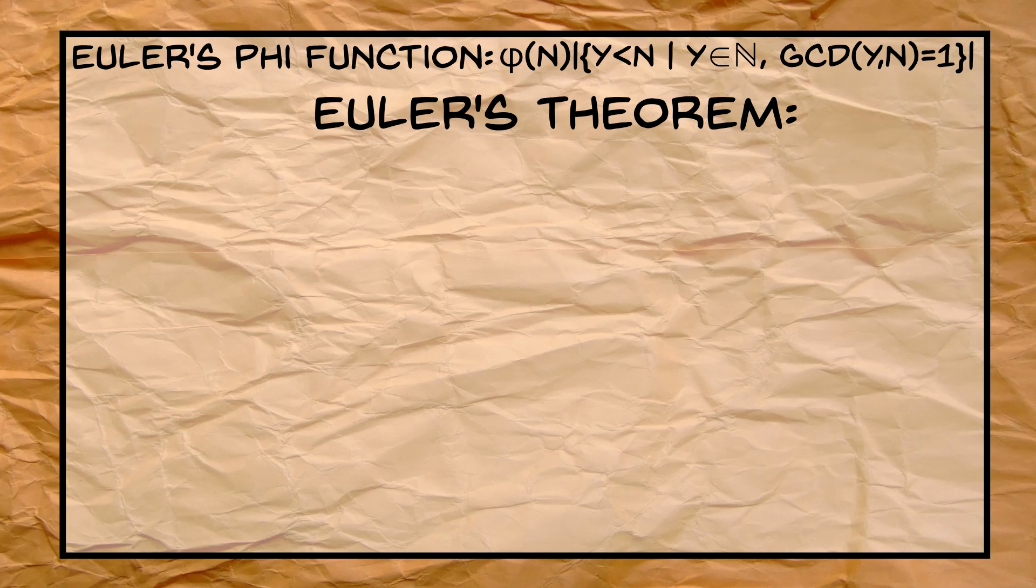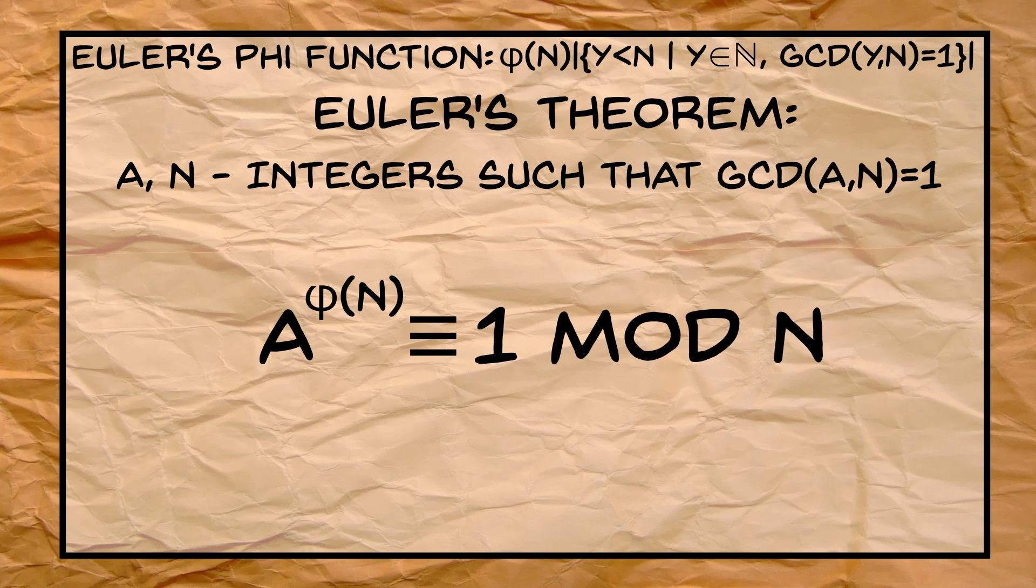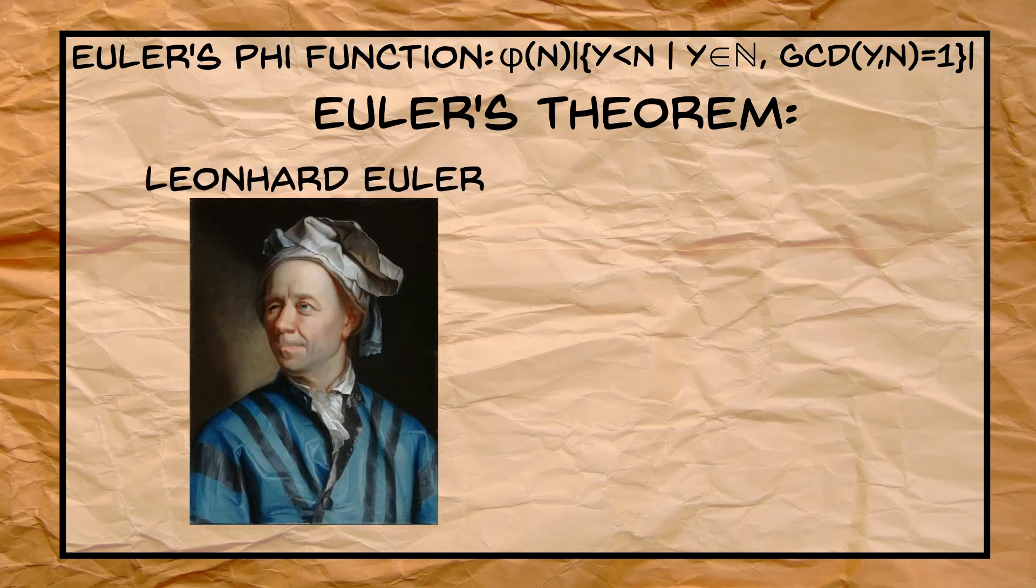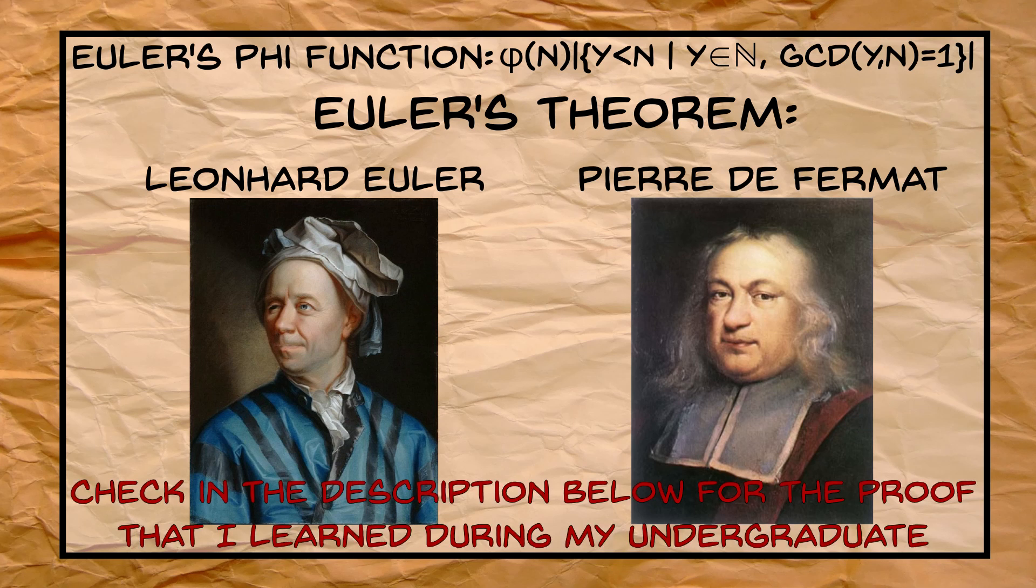This leads naturally to Euler's theorem, which says that for any integer a co-prime to n, it holds that a to the power of phi of n is congruent to 1 modulo n. This is a direct consequence of how phi of n is defined and Fermat's little theorem. Have a go at proving it yourself.